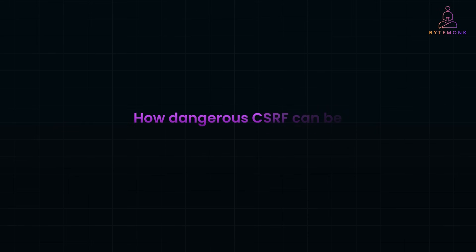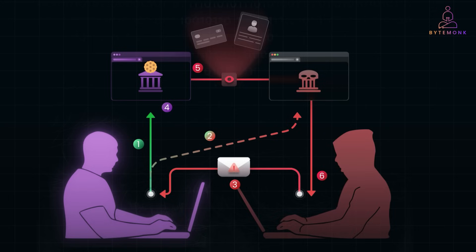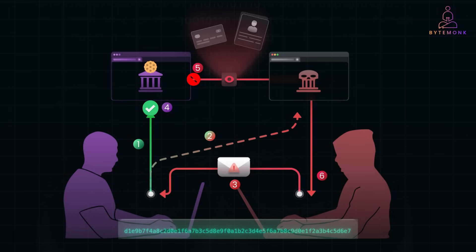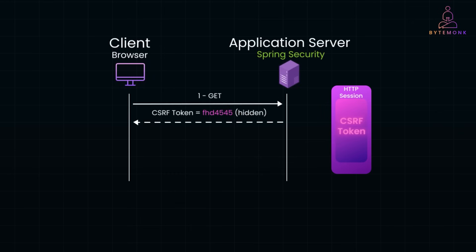After seeing how dangerous CSRF can be, let's go over how to prevent it. In a CSRF attack, the attacker tricks an authenticated user into unknowingly making a malicious request. This happens because browsers automatically send authentication cookies with every request, whether the user intends to or not. But what if the server required a secret token that only the real user knows? That's exactly what CSRF tokens do — they ensure that only legitimate requests get processed. A CSRF token is a unique, randomly generated value that must be sent with every sensitive request. When the user logs in, the server authenticates them and generates a random CSRF token, storing it in the session or a cookie.